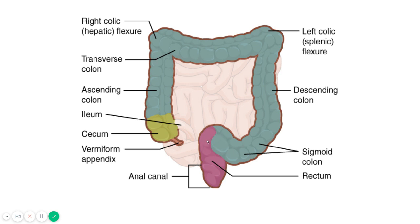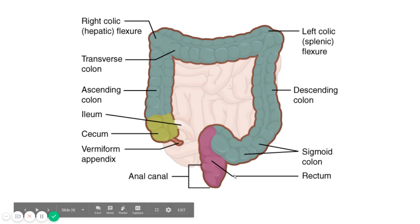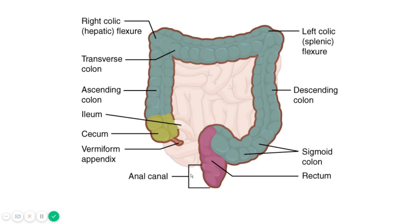The rectum is the last part of the large intestine, where feces are temporarily stored and ejected through the anus at certain intervals. The anus is surrounded by two sphincters: the internal sphincter, which is smooth muscle, and the outer sphincter, which is formed of striped muscle.